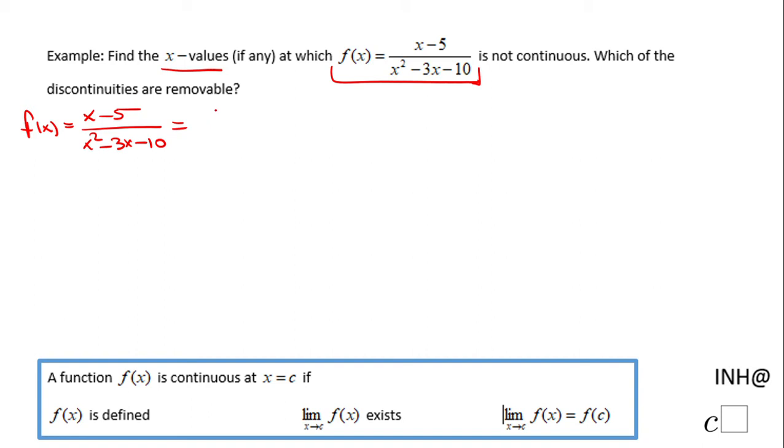But first of all, I suggest you factor out if possible. In this case, we can factor out the denominator x² - 3x - 10. That will be (x - 5)(x + 2). Now we notice that this x - 5 cancels out, and the simplest form of this function is 1 over (x + 2).